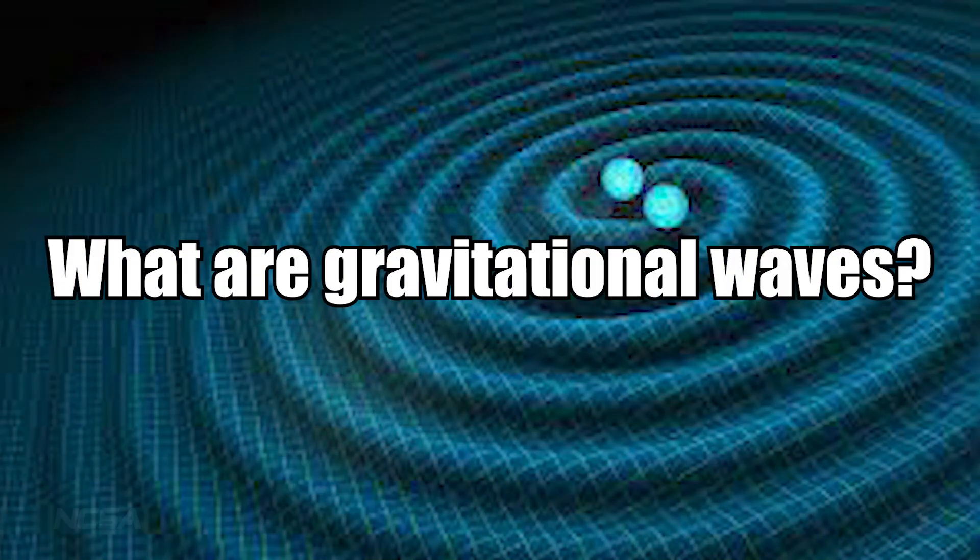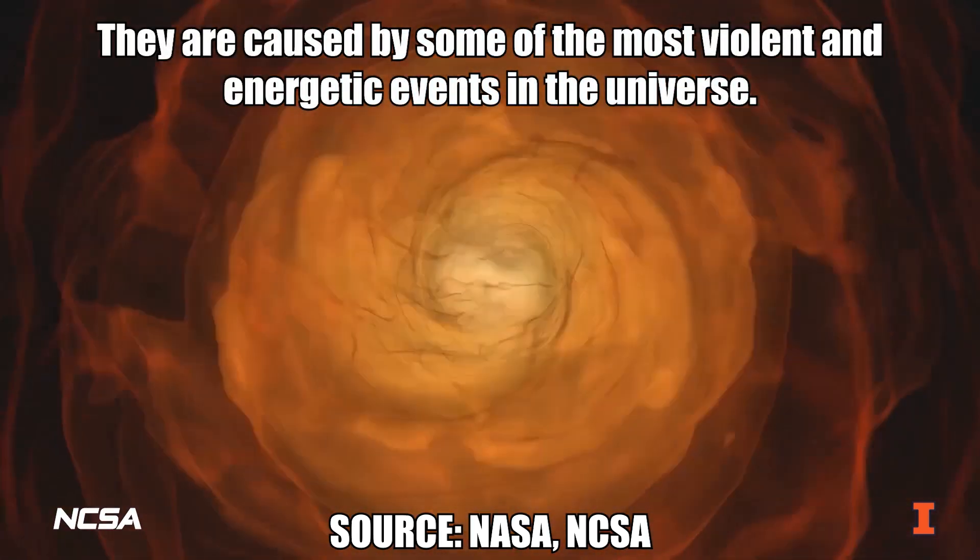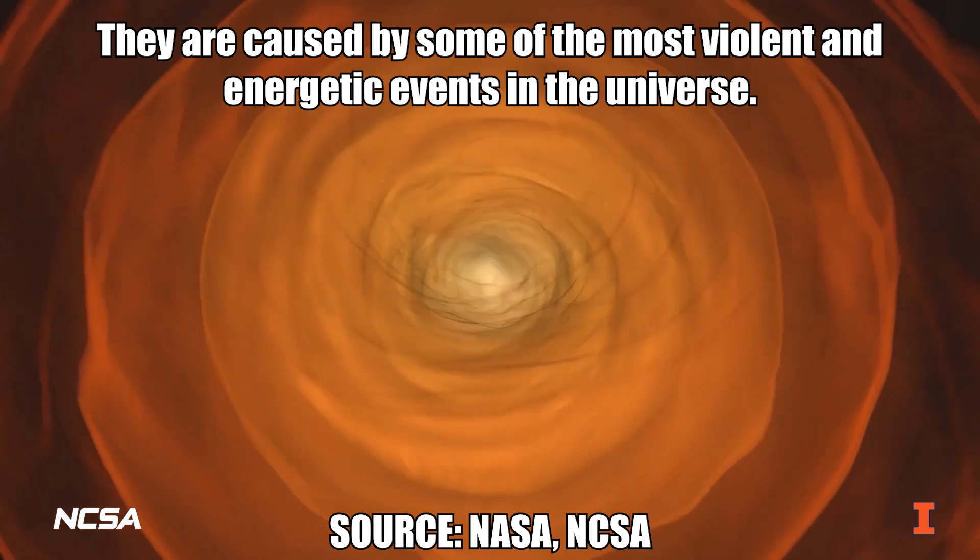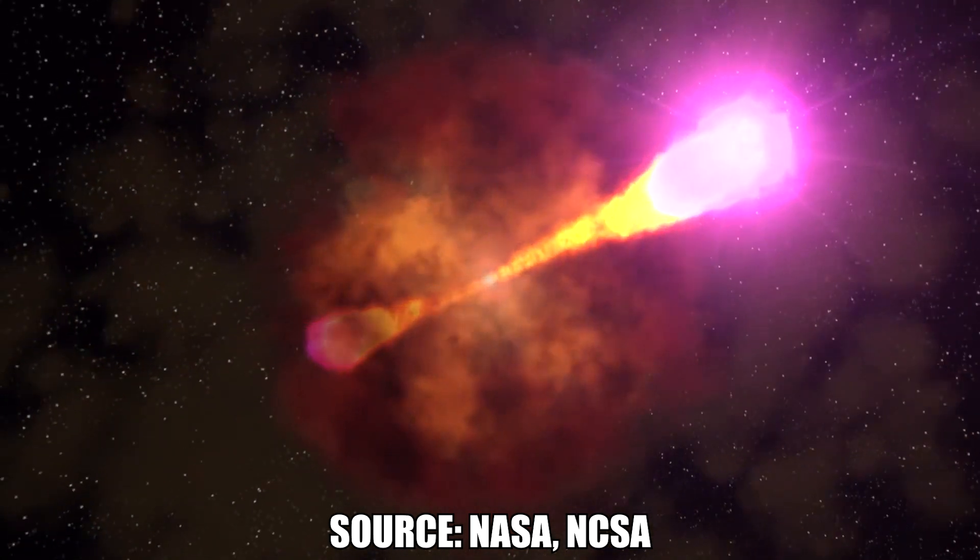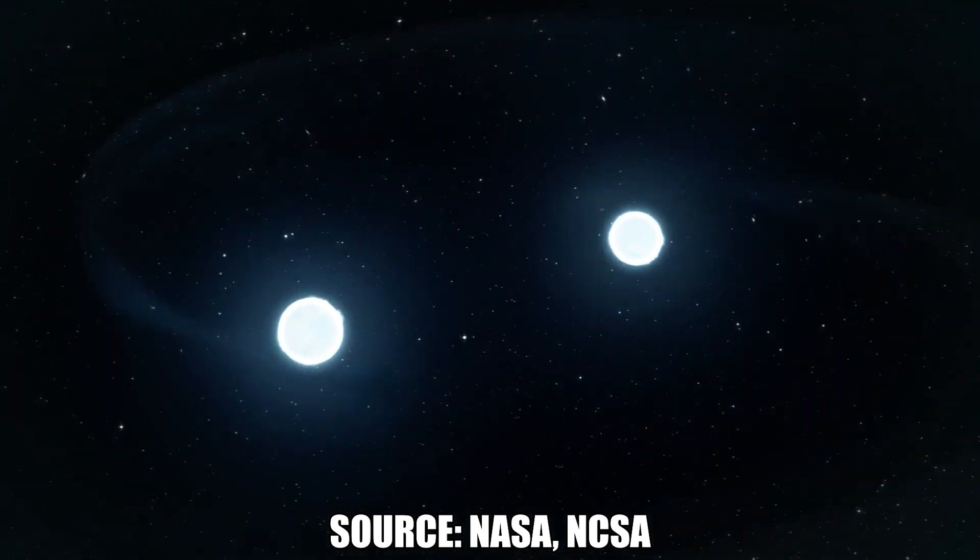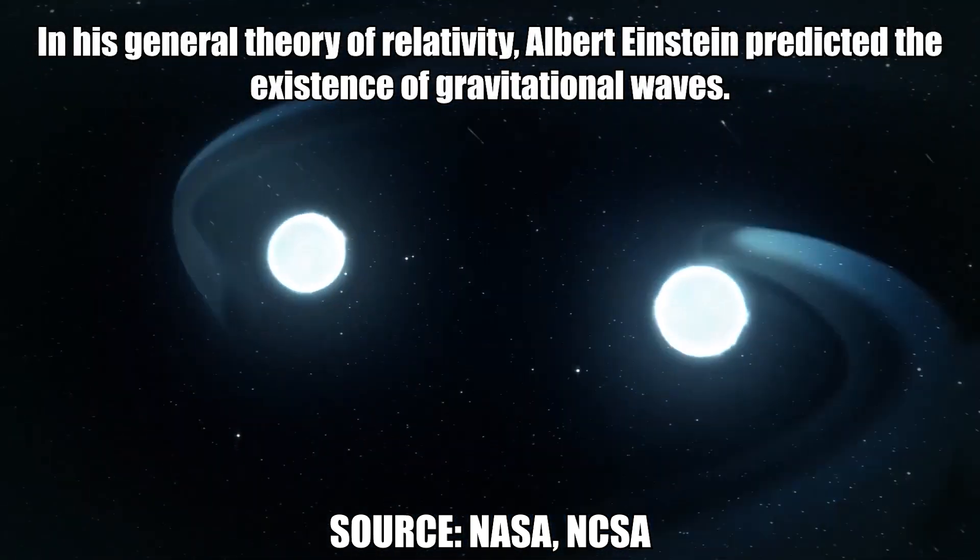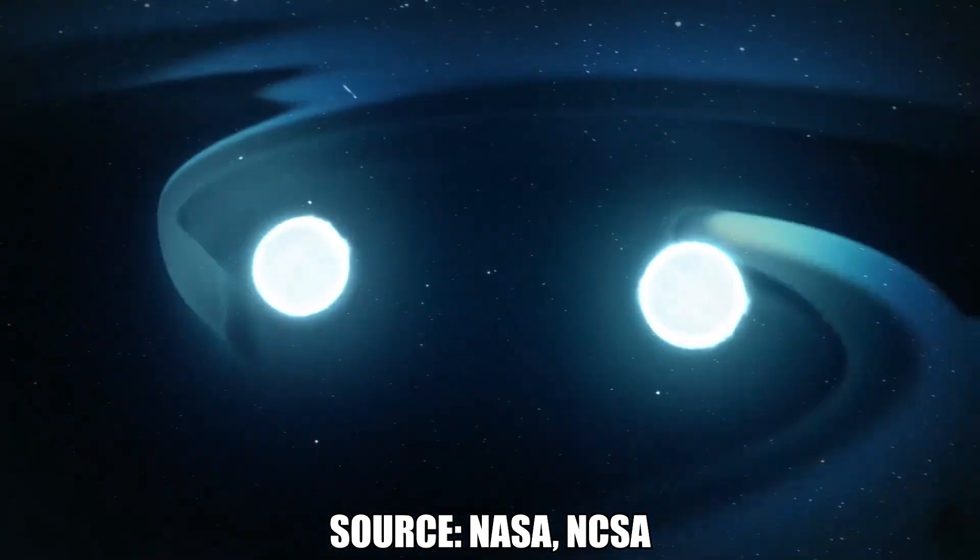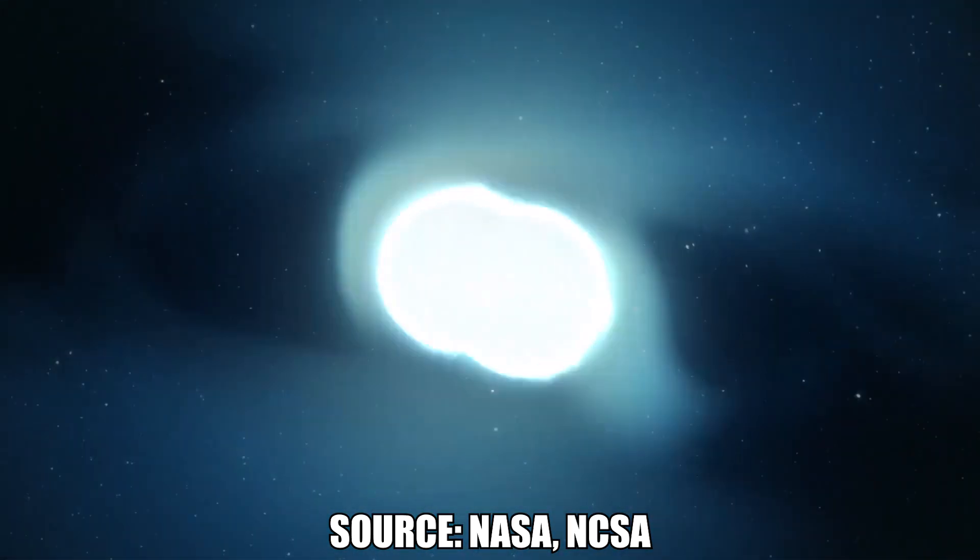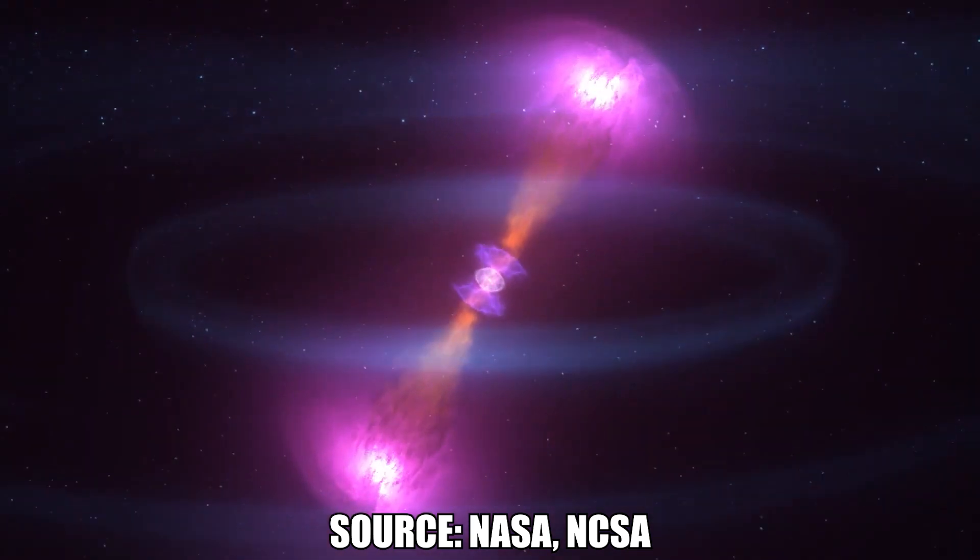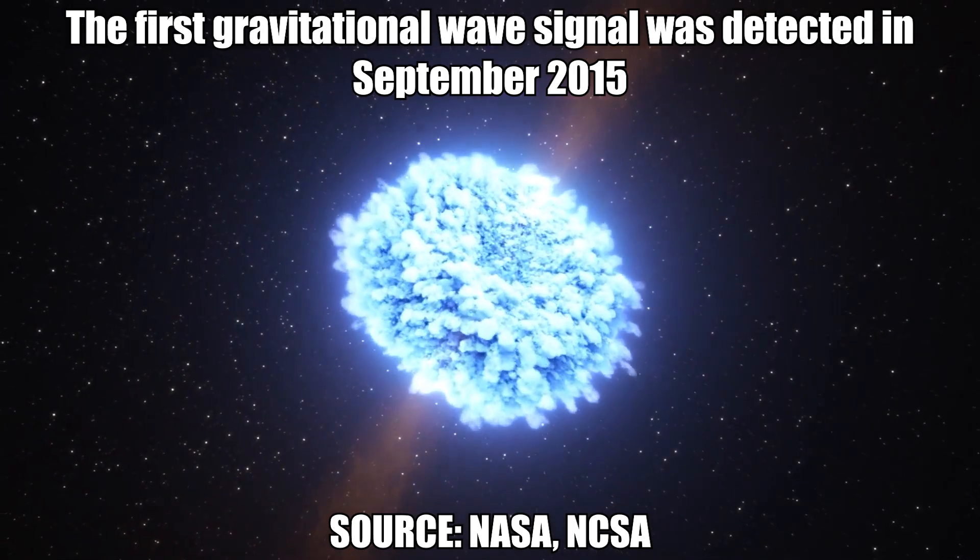Next question, what are gravitational waves? Gravitational waves are invisible ripples in the fabric of space-time. They are caused by some of the most violent and energetic events in the universe. This includes colliding black holes, collapsing stellar cores, and merging neutron stars. Gravitational waves travel at the speed of light, squeezing and stretching anything in their path. In his general theory of relativity, Albert Einstein predicted the existence of gravitational waves. In 1916, his calculations showed that massive accelerating objects could disrupt and distort space-time like waves moving away from a stone thrown into a pond. The first gravitational wave signal was detected in September 2015.